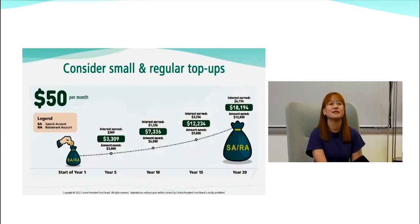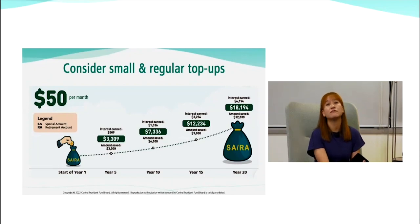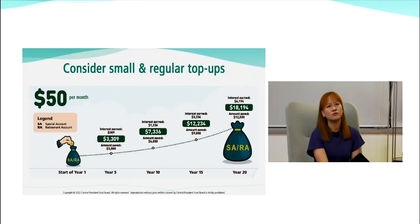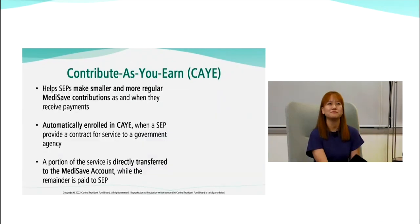You don't have to top up in a lump sum — you can consider making small and regular top-ups. Even a small top-up of $50 per month could make quite a significant increase to your savings in 20 years, due to the power of compounding interest. If you start young, by the time you retire that $50 monthly top-up could grow to a significant amount. You can arrange for GIRO monthly deductions or do a PayNow to CPF for top-ups.